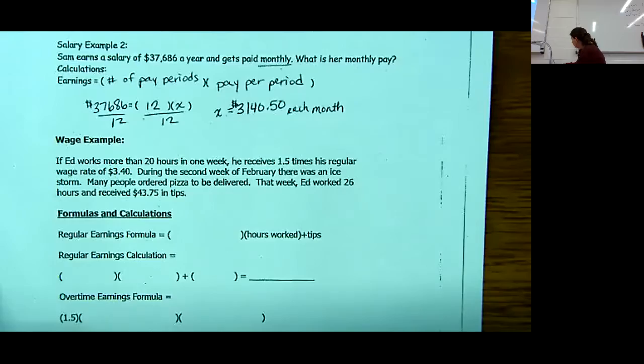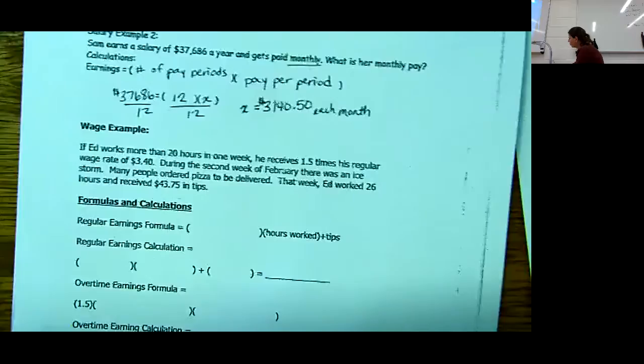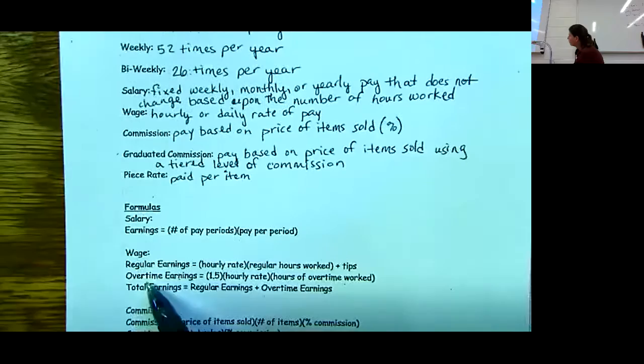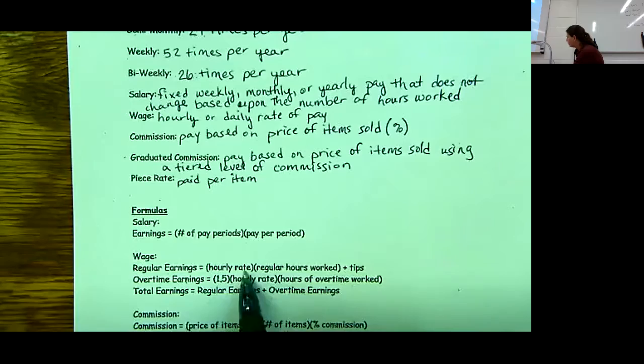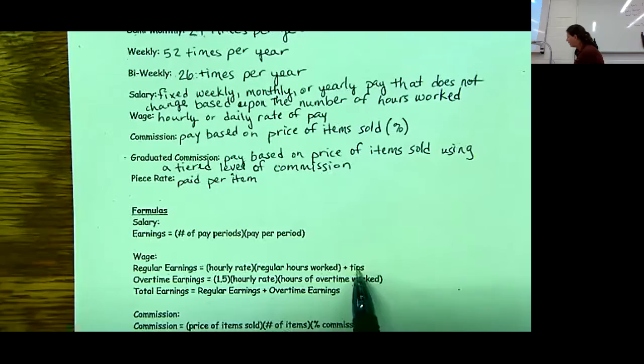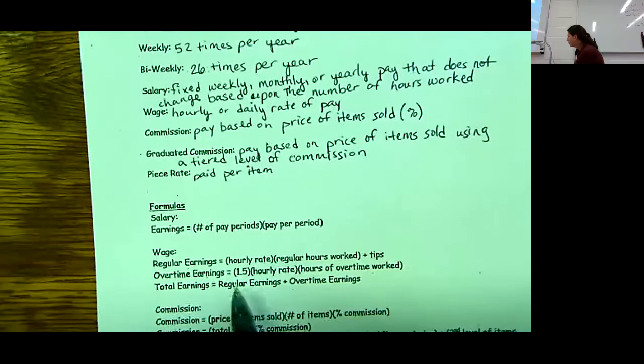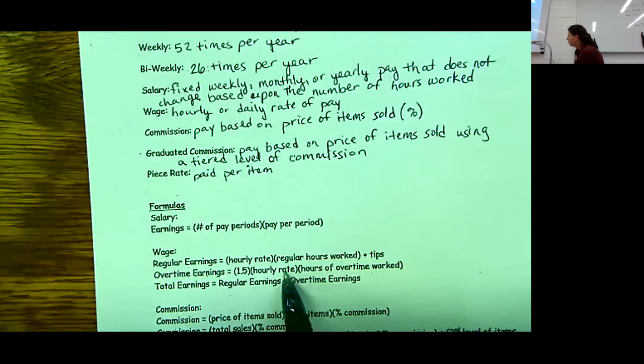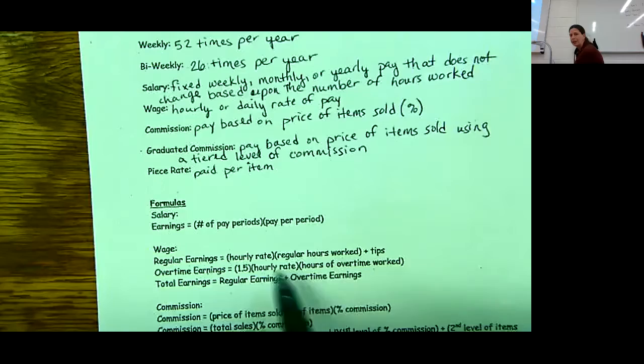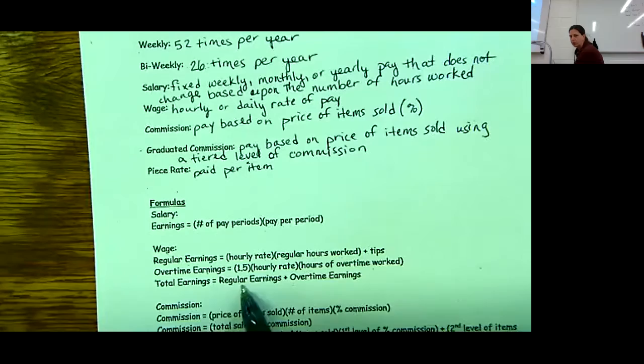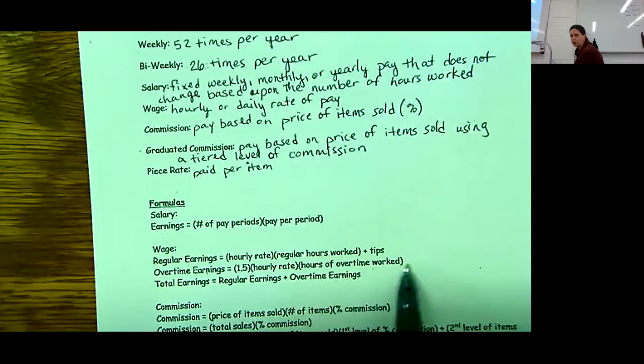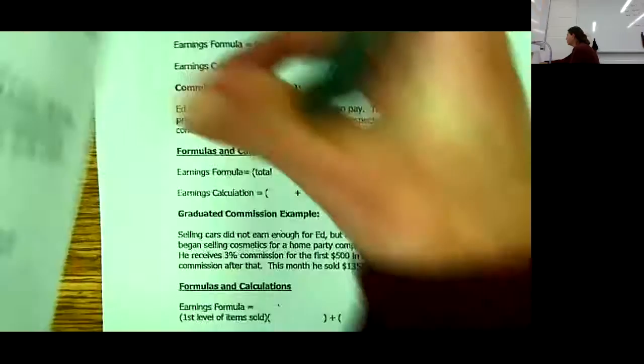Wage, remember this is when you get paid a certain amount per hour. We have regular earnings, which is your hourly rate times the regular hours you worked, plus if you have a job that gets tips. Overtime earnings, most people unless it's maybe a holiday, typically get time and a half. So one and a half times your hourly rate times the hours of overtime work. Occasionally somebody might say that you get paid double time, we would change this number to a two if it was a holiday. That would make our total earnings the regular earnings plus overtime.